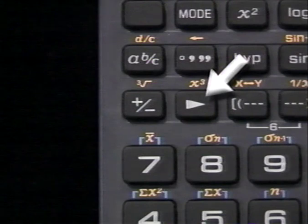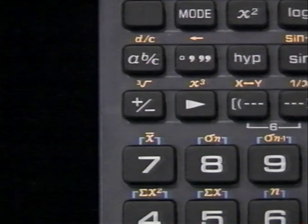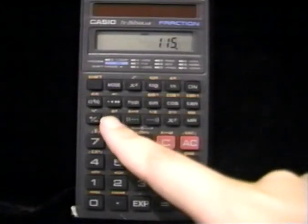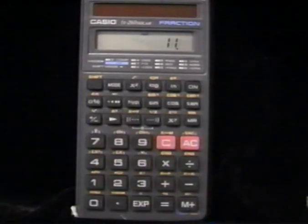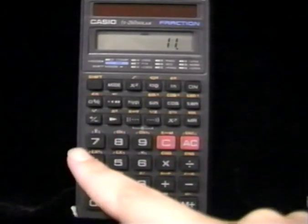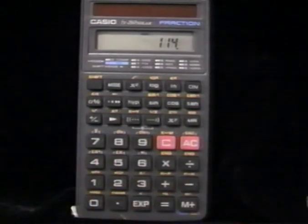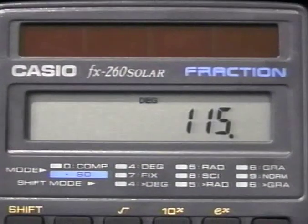The backspace key, the one with the solid triangle on it located above the 8 key, allows us to remove one character at a time without erasing the entire number entered to this point. We press the backspace key once and the 5 disappears. Now, I could enter 4, making the entry 114.